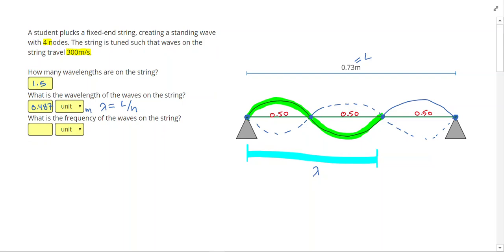Then it says what is the frequency of the waves on this string? Next I'm going to use the wave equation, V equals F times lambda, which can be rearranged. Solving for frequency, frequency equals V divided by lambda. My velocity was given to me in the problem as 300 meters per second, so I can do 300 divided by 0.487, and that gives me a frequency of 616 hertz.